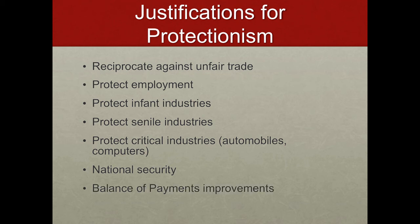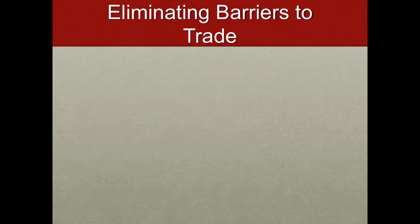Another justification is balance of payments improvements. Going back to mercantilism, countries love to have a trade surplus and hate to have a trade deficit. So they might introduce elements of protectionism to limit the amount of imports coming in and thereby improve their balance of payments — the difference between imports and exports. Once trade barriers are in place, how can they ever be eliminated if we want to capture the gains from trade?